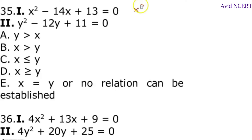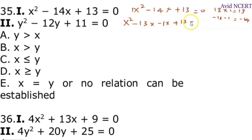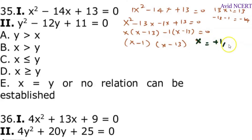To find the value of x, which is x square minus 14x plus 13 equals 0. 13 times 1 is 13, so we have to take two numbers: minus 13 and minus 1. 13 times 1 equals 13, and minus 13 minus 1 equals minus 14. So, x square minus 13x minus 1x plus 13 equals 0. Taking x common: x minus 13, minus 1 into x minus 13 equals 0. So, x minus 1 times x minus 13 equals 0, which gives x equals 1 or 13.